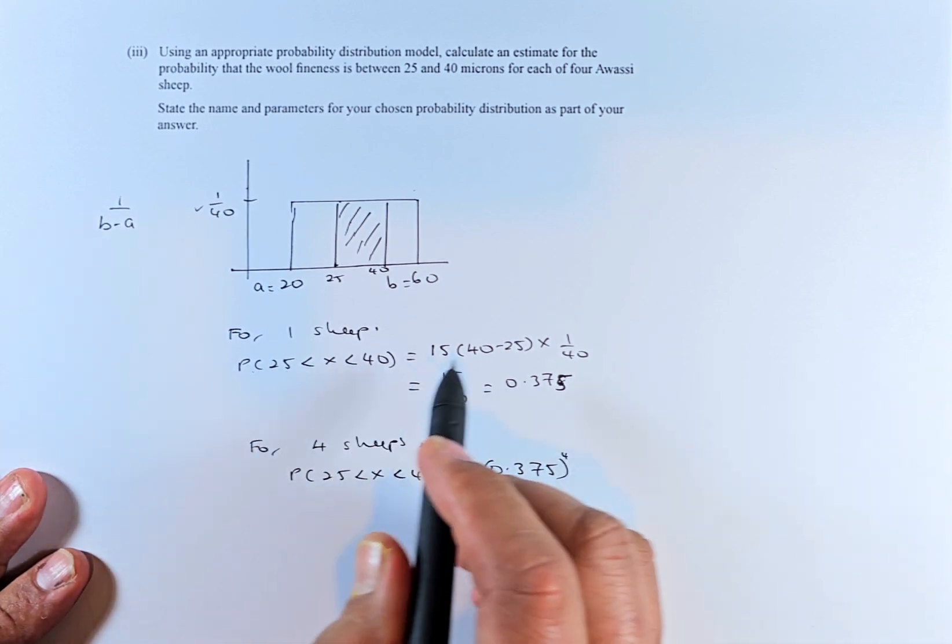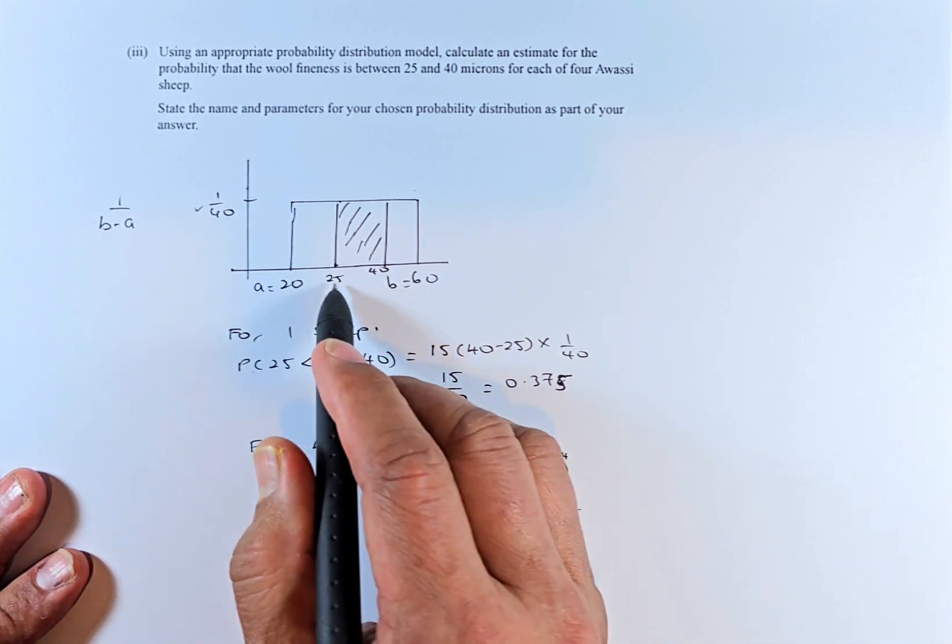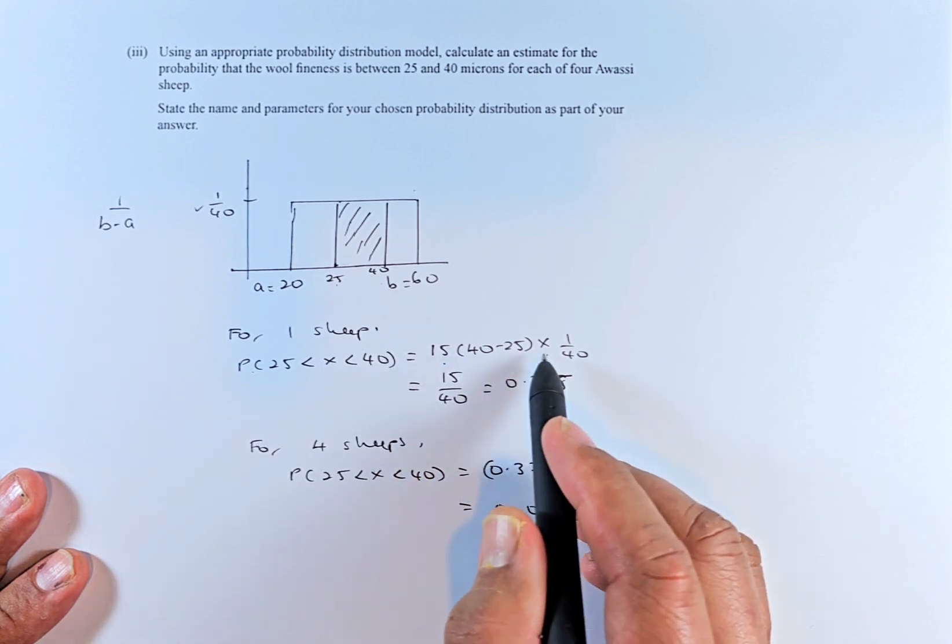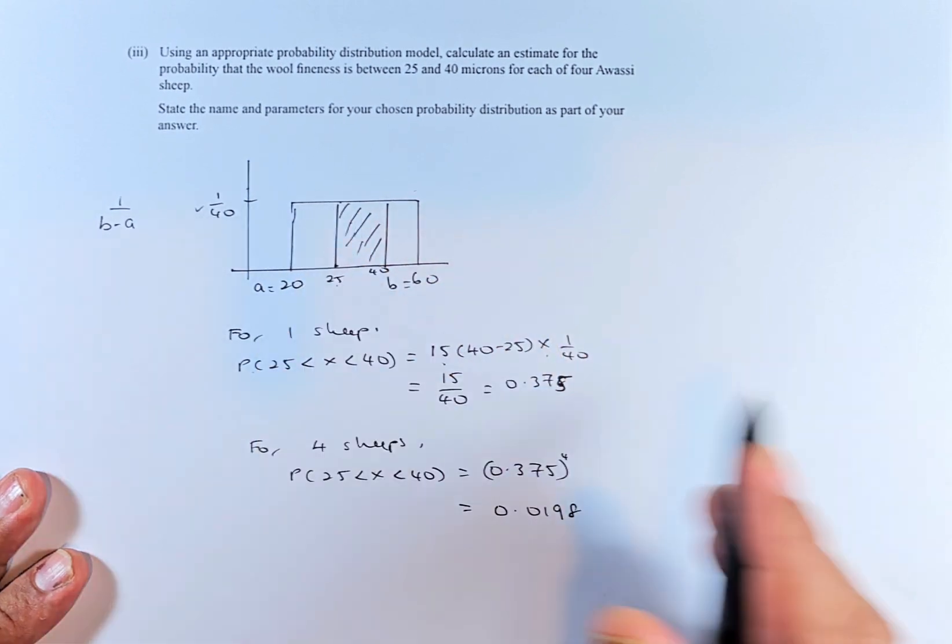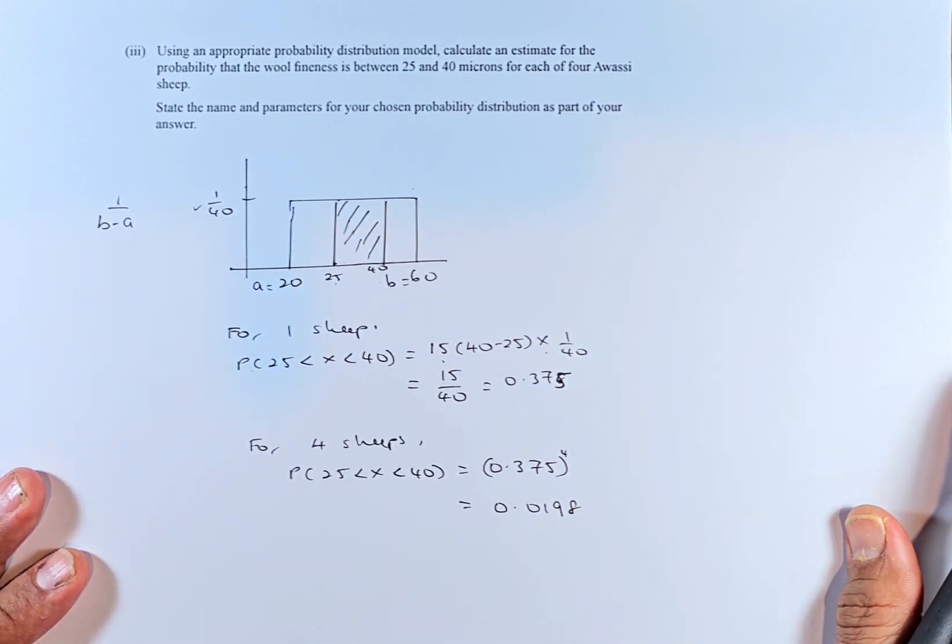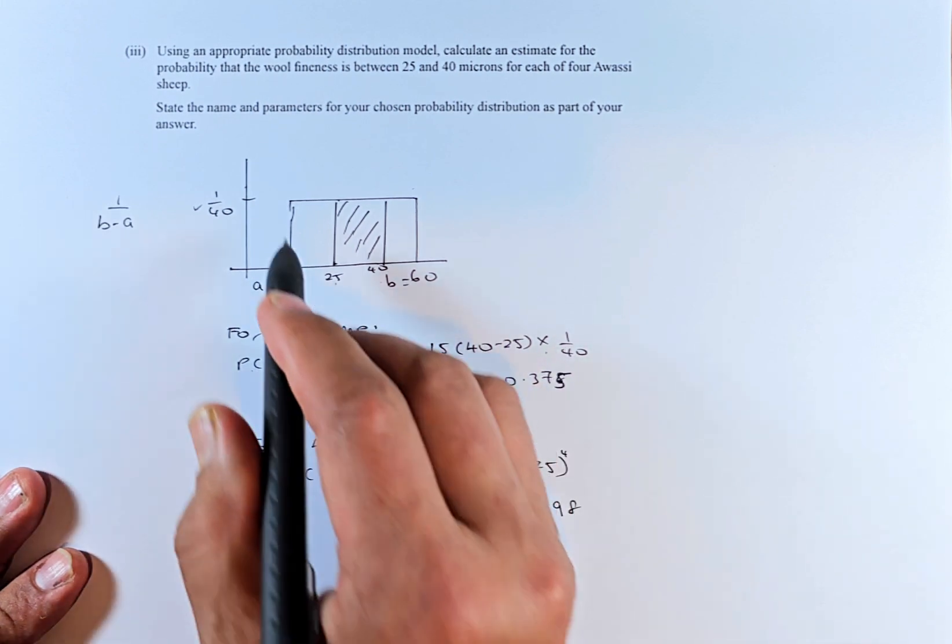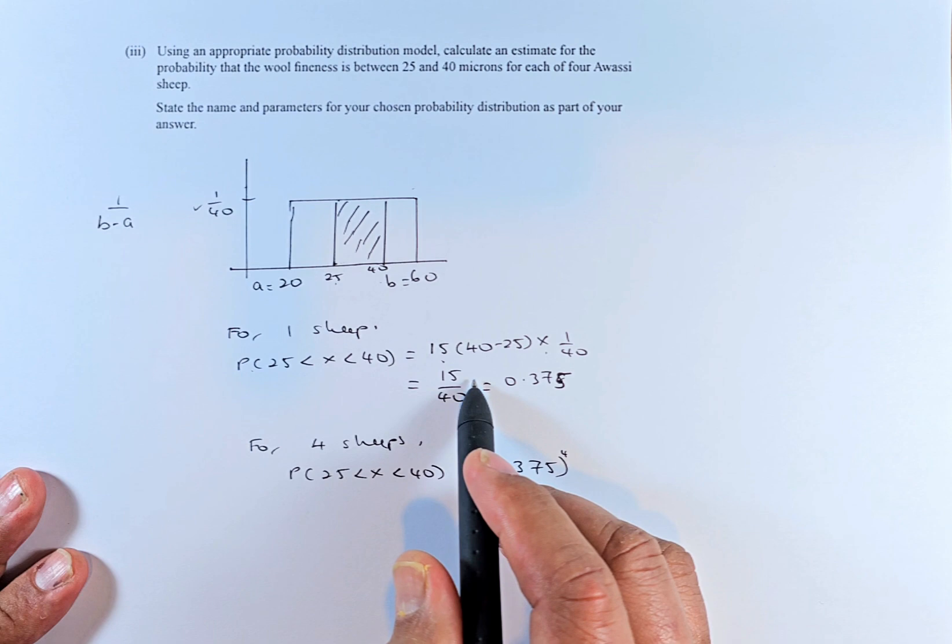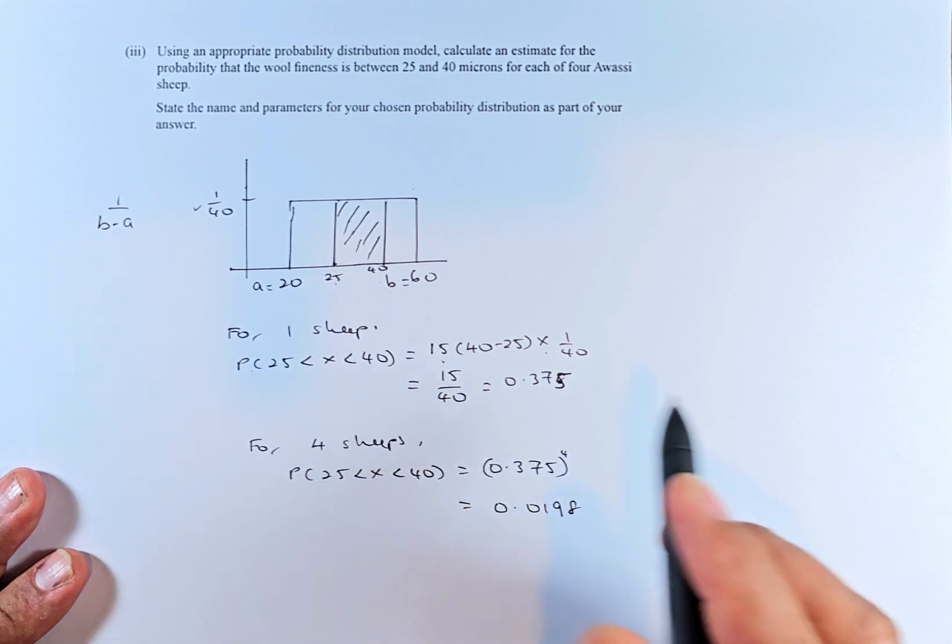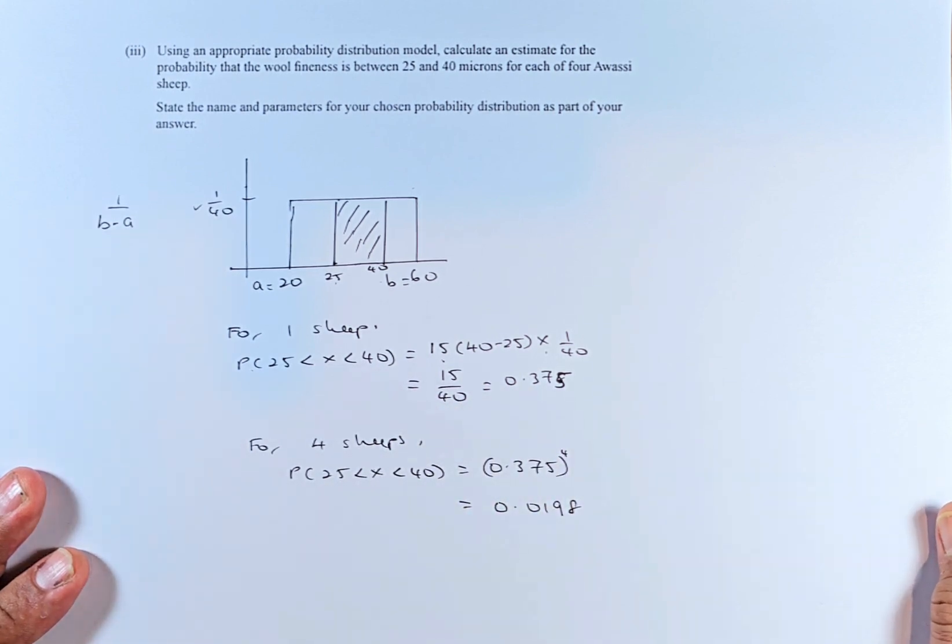For 1 ship between 25 and 40, the probability is 15 because 40 minus 25 is 15, multiplied by the height. The area of the rectangle is the probability. So 15 multiplied by 1 over 40 gives us 15 over 40, which equals 0.375.